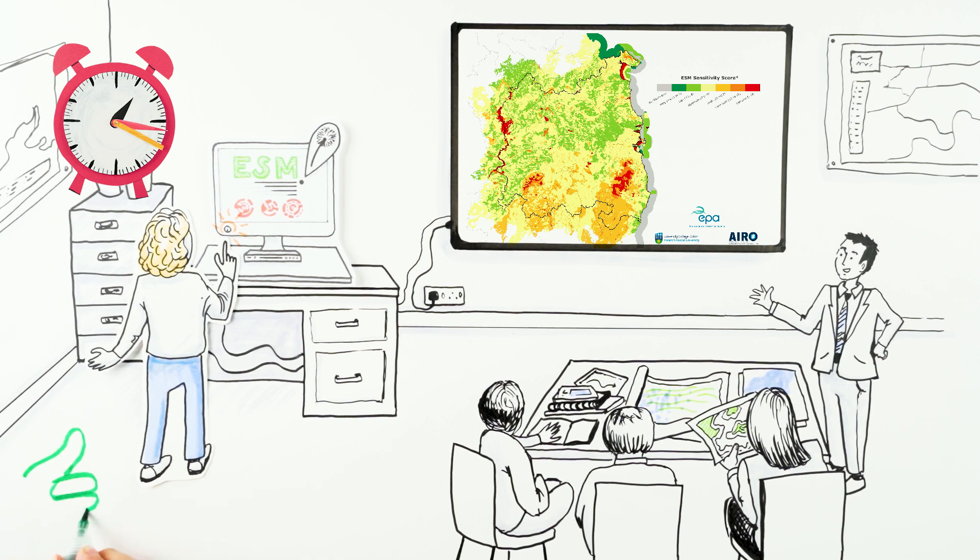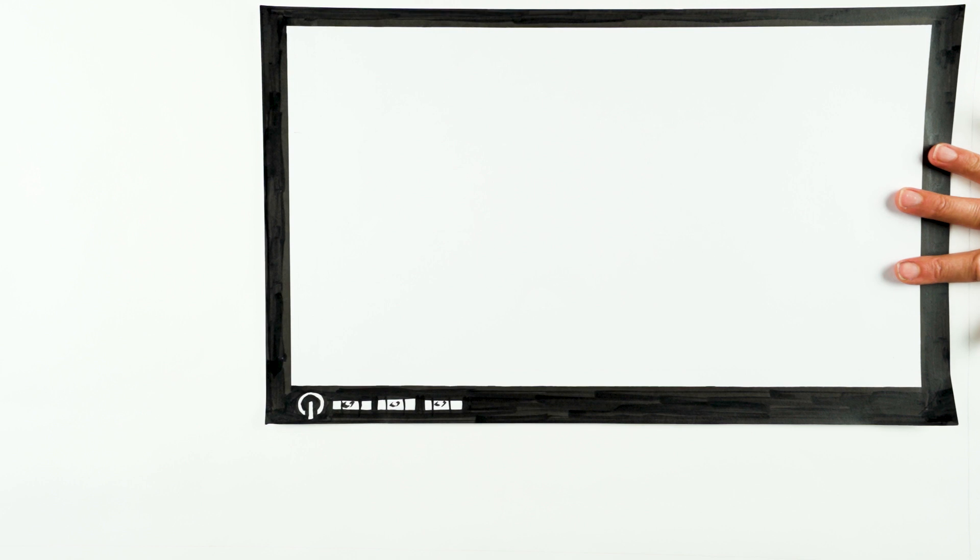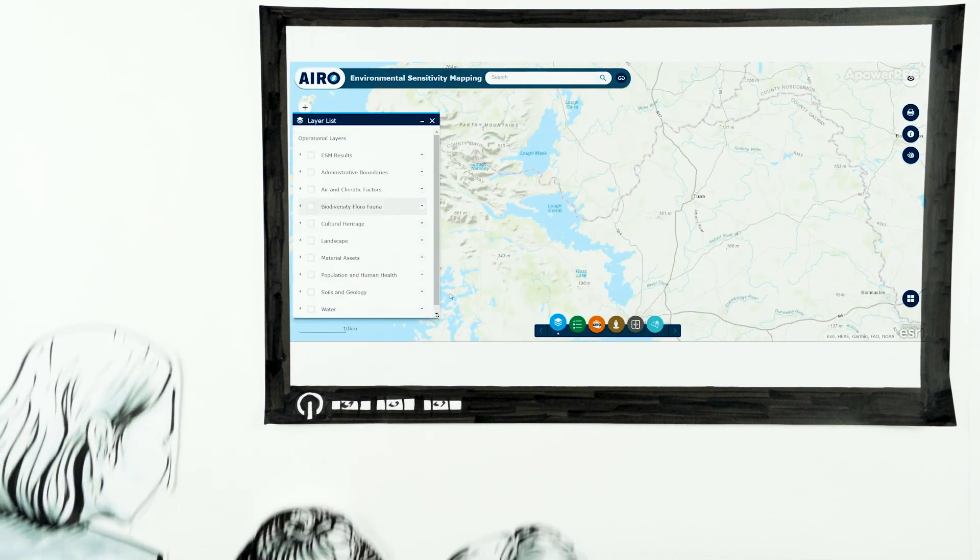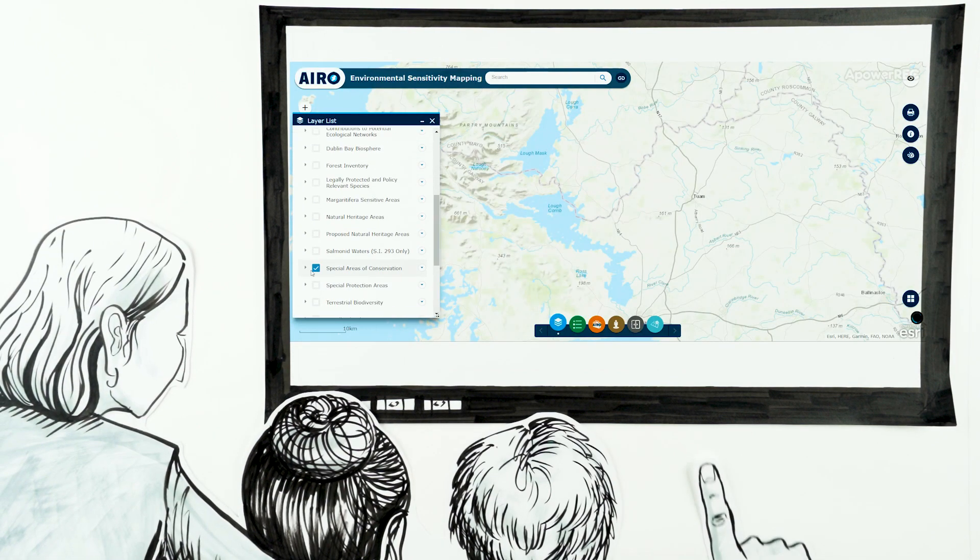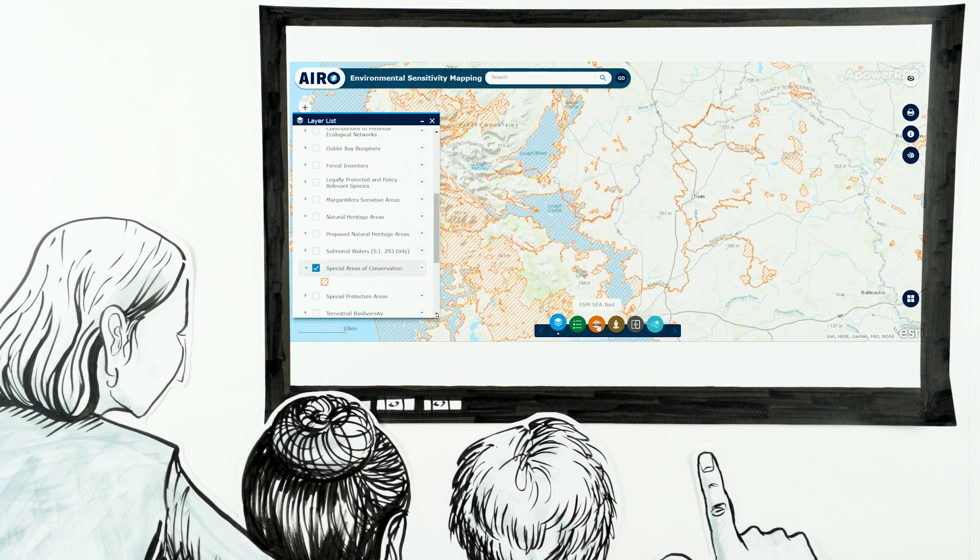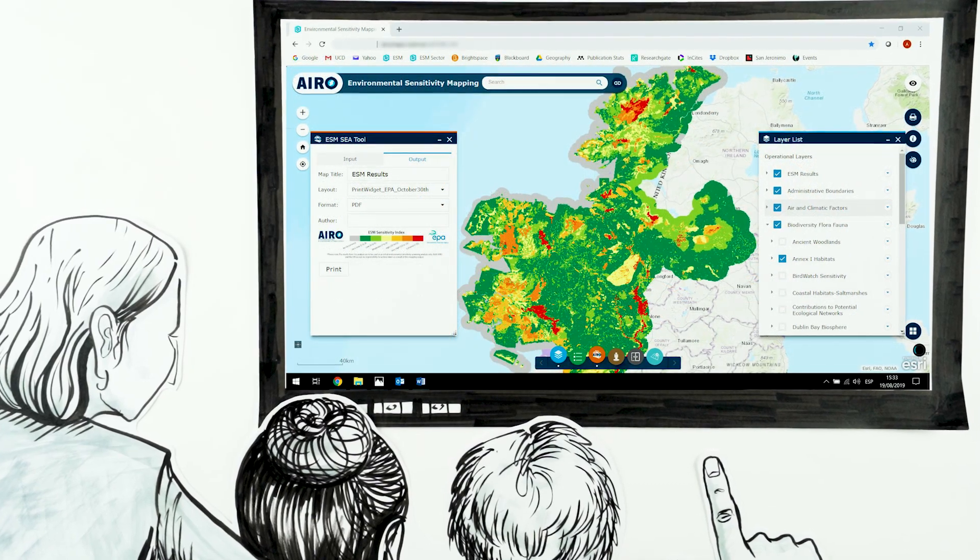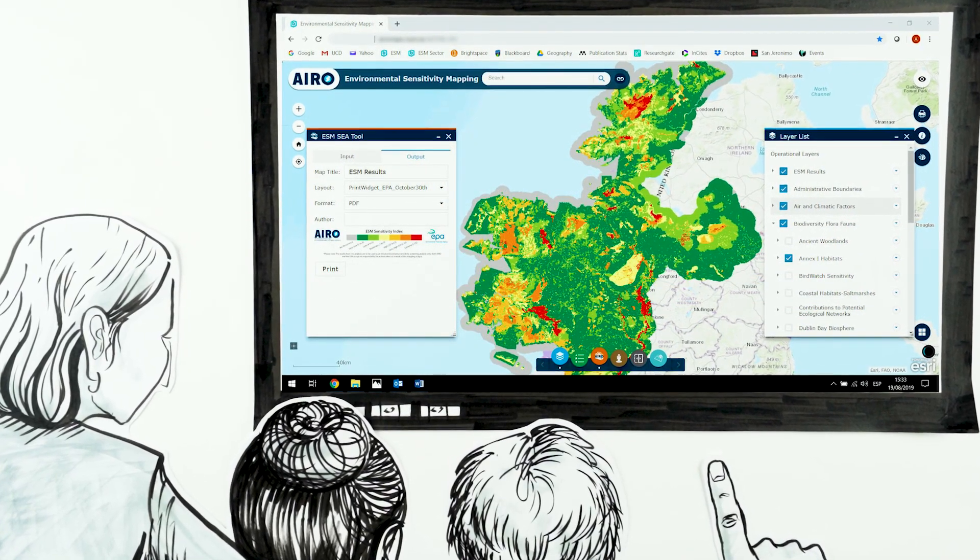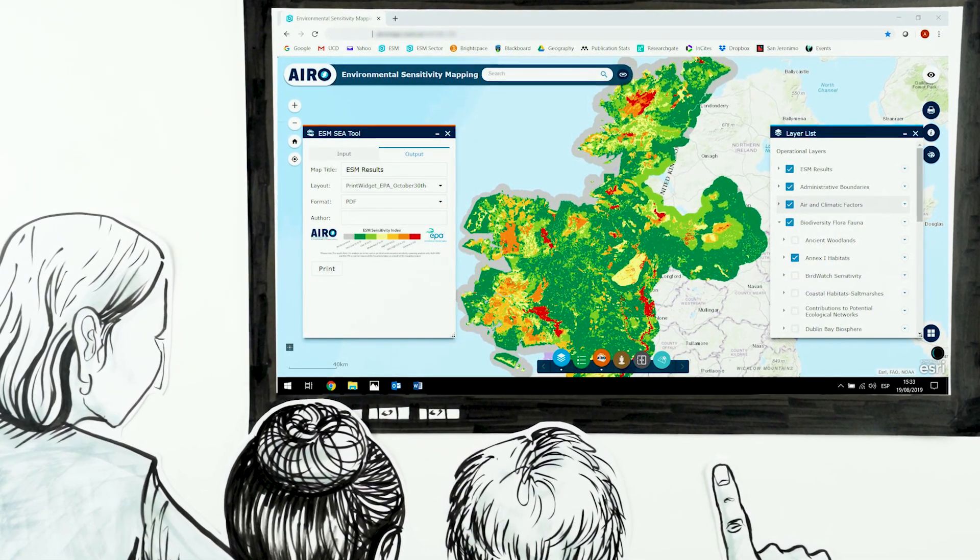The ESM tool has two parts: a viewer which draws on a large array of over 100 publicly available datasets, and an analysis tool or widget that can create plan-specific environmental sensitivity maps to inform SEA and planning processes.